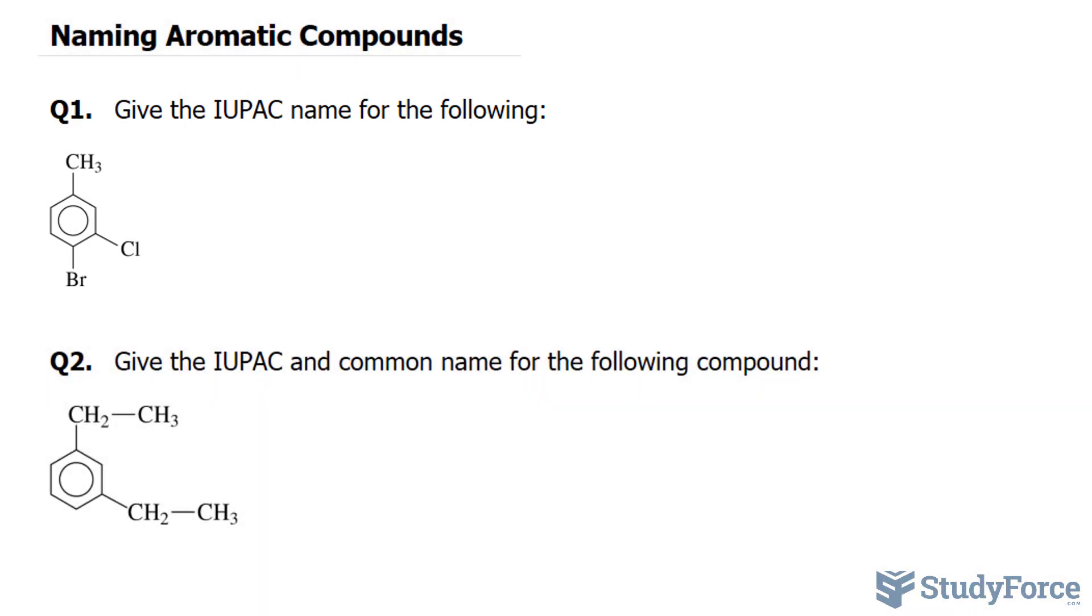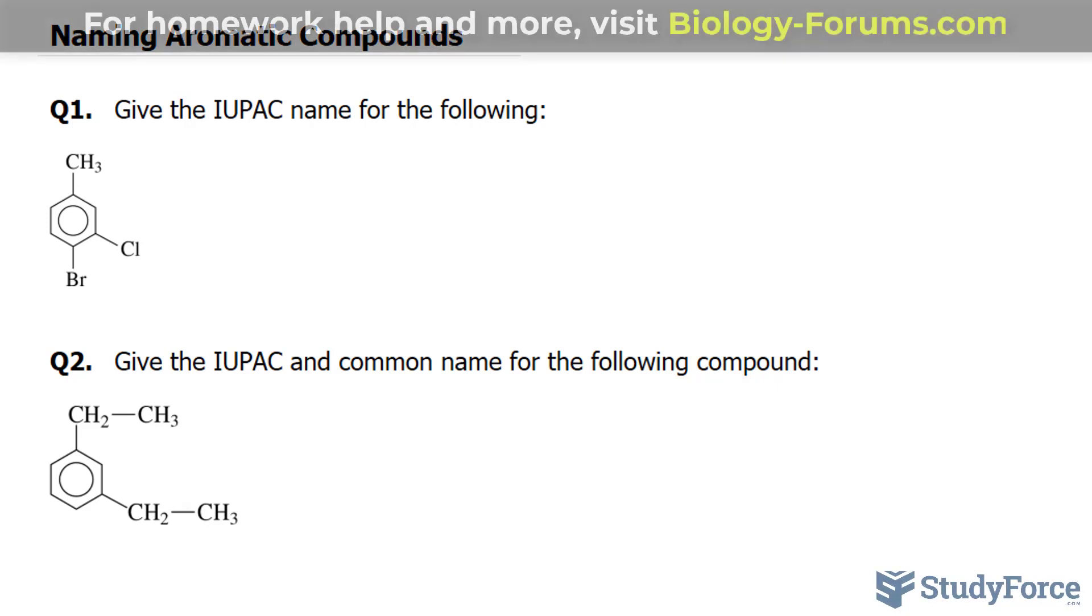And before we begin, an aromatic compound is one that consists of one or more rings that contain alternating single and double bonds in its chemical structure.